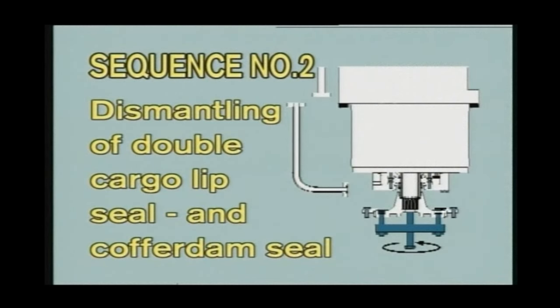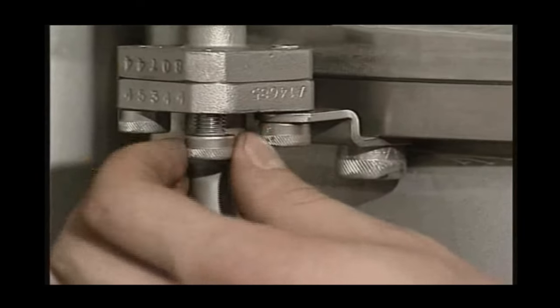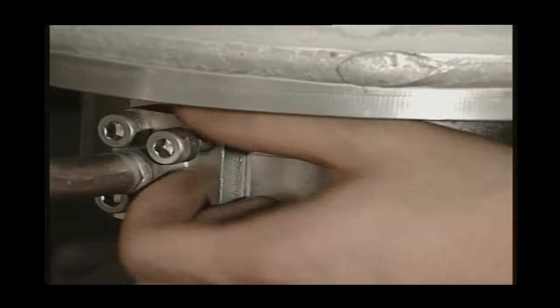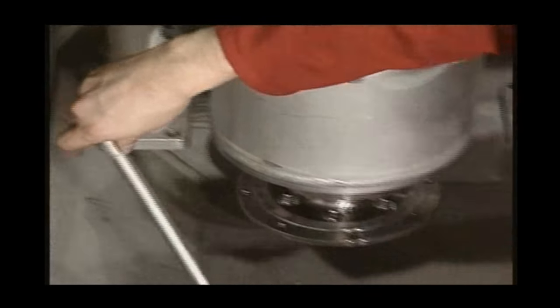Sequence number two: dismantling of double cargo lip seal and cofferdam seal. First, dismantle lower part of cofferdam check pipe.